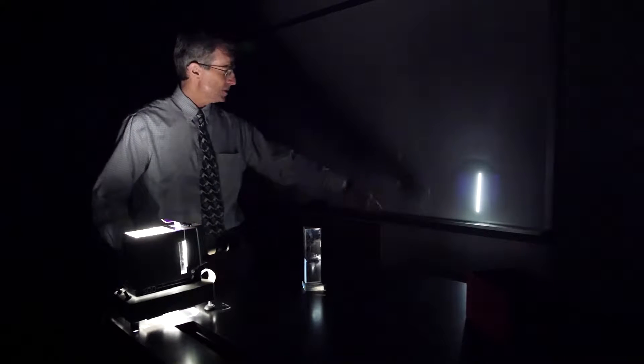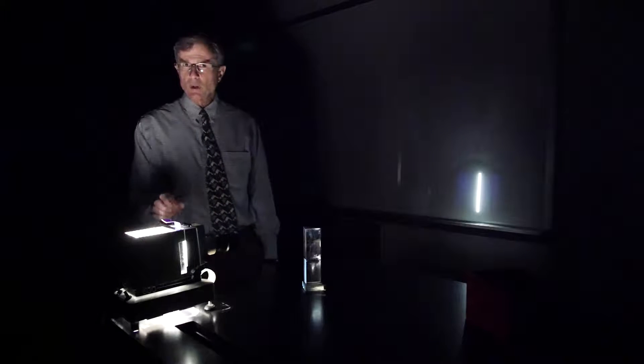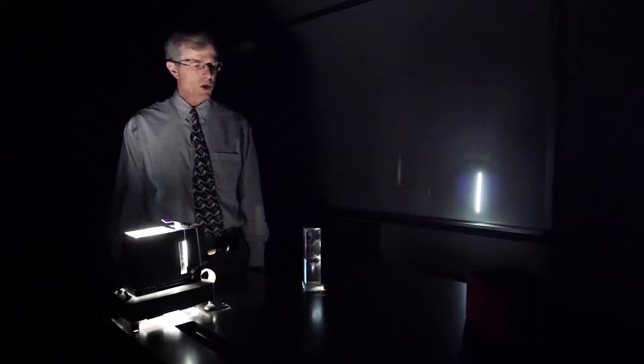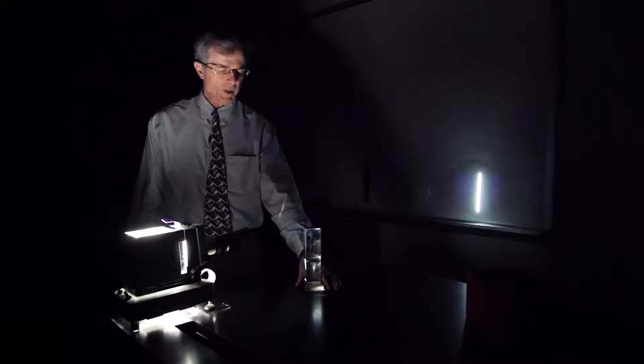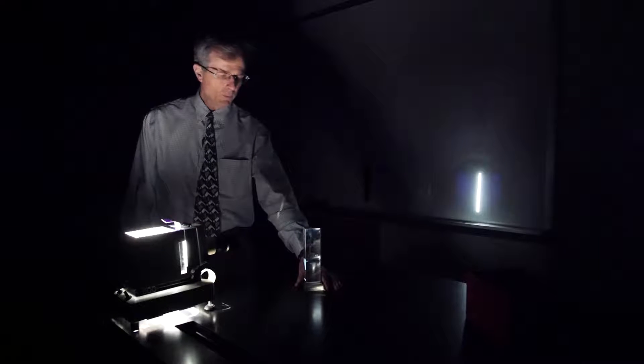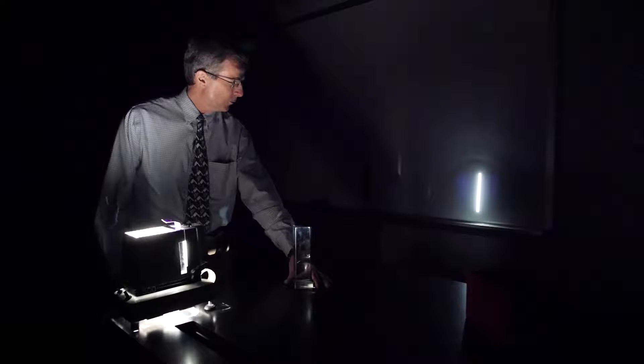What I have here is a projector, and I've got a slide in the projector that produces just a vertical slit of light. And I also have a prism here that I will move now in front of that vertical slit of light to produce this rainbow of colors.